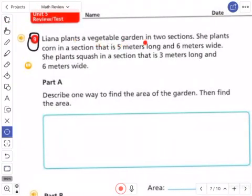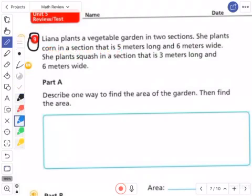Leanna plants a vegetable garden in two sections. She plants corn in a section that is 5 meters long and 6 meters wide. She plants squash in a section that is 3 meters long and 6 meters wide.